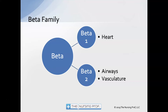The beta adrenergic system has two components: beta 1 and beta 2. Beta 1 is concerned with the effect on the heart; beta 2 affects the airways and vasculature. When you think of beta blockers, don't make it difficult — they block beta, the sympathetic adrenergic system. Some beta blockers are very selective for beta 1, while others block both. With non-selective beta blockers, we have concern about whether they could affect the airway. So if a patient has COPD or asthma, a beta blocker could cause bronchoconstriction.